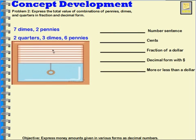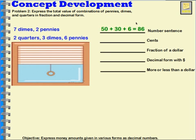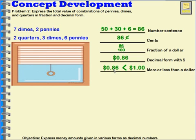Let's try two quarters, three dimes, and six pennies. For that number sentence: two quarters would be fifty cents, three dimes would be thirty cents, and six pennies would be six cents. That gives us a total of eighty-six cents, which is eighty-six hundredths of a dollar. In decimal form we would write zero decimal eight six. Eighty-six cents is less than one dollar.